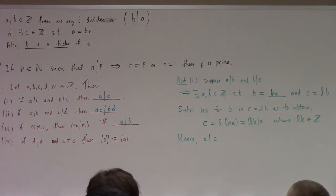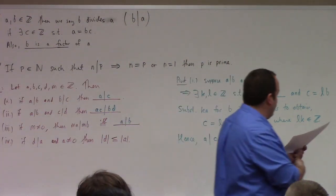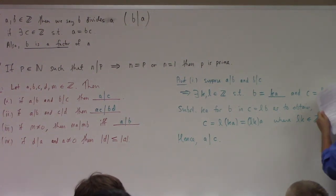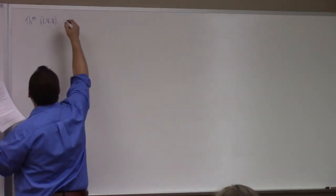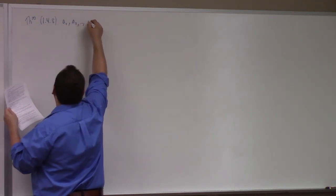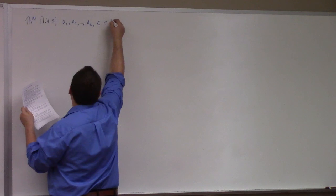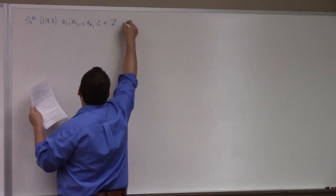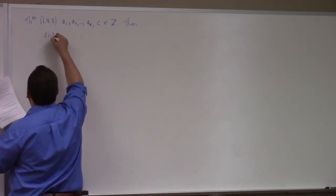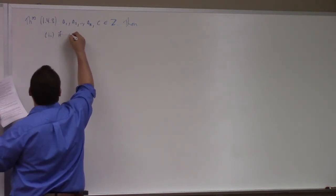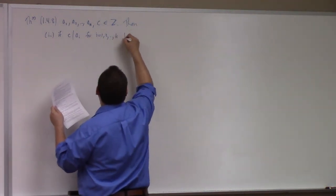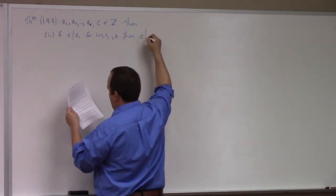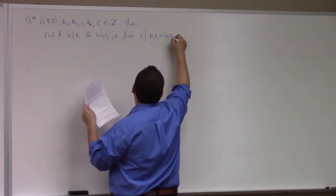There's another proposition after this which has some nice results. I'll state them — actually, I call this a theorem. If you have a₁, a₂, ..., aₖ and also a number c, all integers, then: one — if c divides aᵢ for i equals 1, 2, all the way out to k, then c divides u₁a₁ plus u₂a₂ plus ... plus uₖaₖ for any choice of u₁, u₂, ..., uₖ in ℤ.